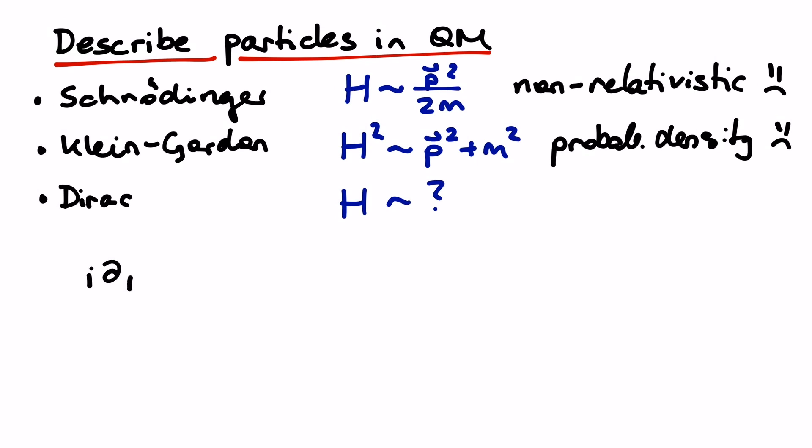A general Schrodinger-type equation looks something like this: i dt acting on psi is a Hamiltonian acting on psi. And for this Hamiltonian, we make the following ansatz. We assume that there is momentum and mass with some coefficients alpha and beta acting on the wave function psi.